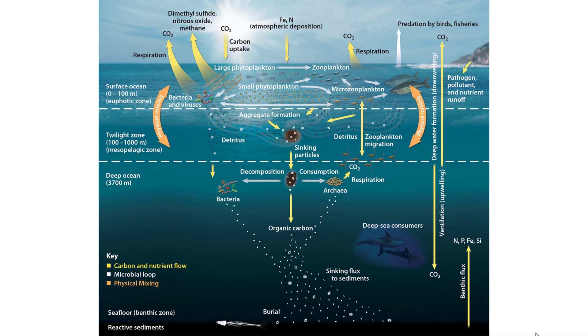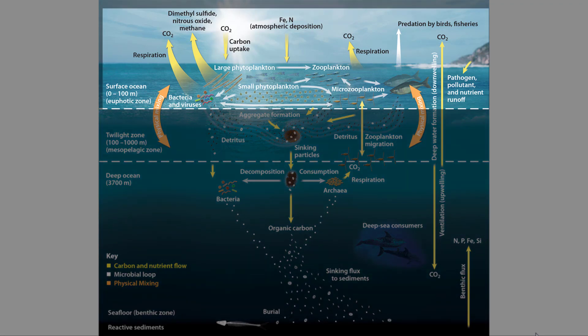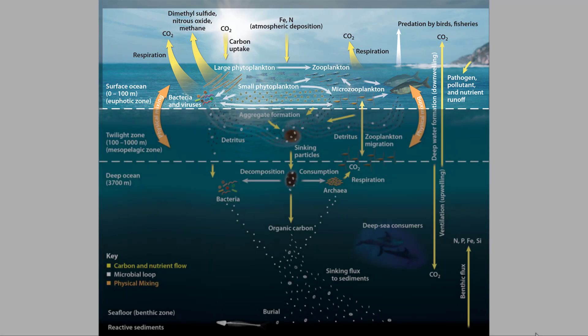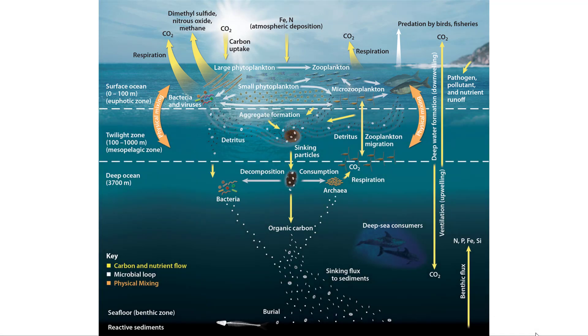Here's a much more detailed view. Notice the very top of the ocean surface — that's where photosynthesis happens. There are also animals up there doing cellular respiration, but photosynthesis only happens at that top surface.